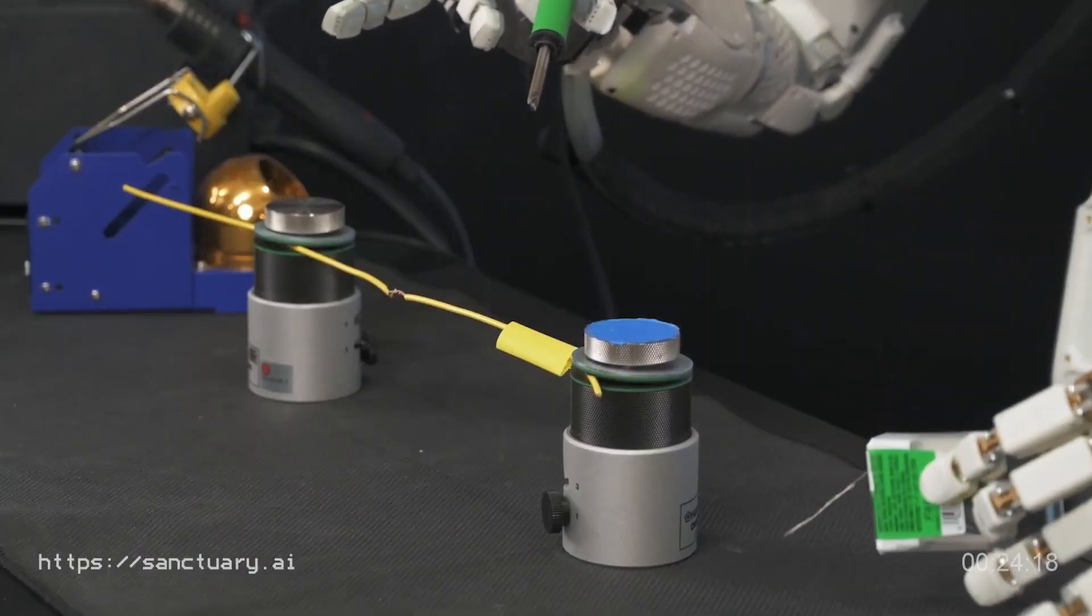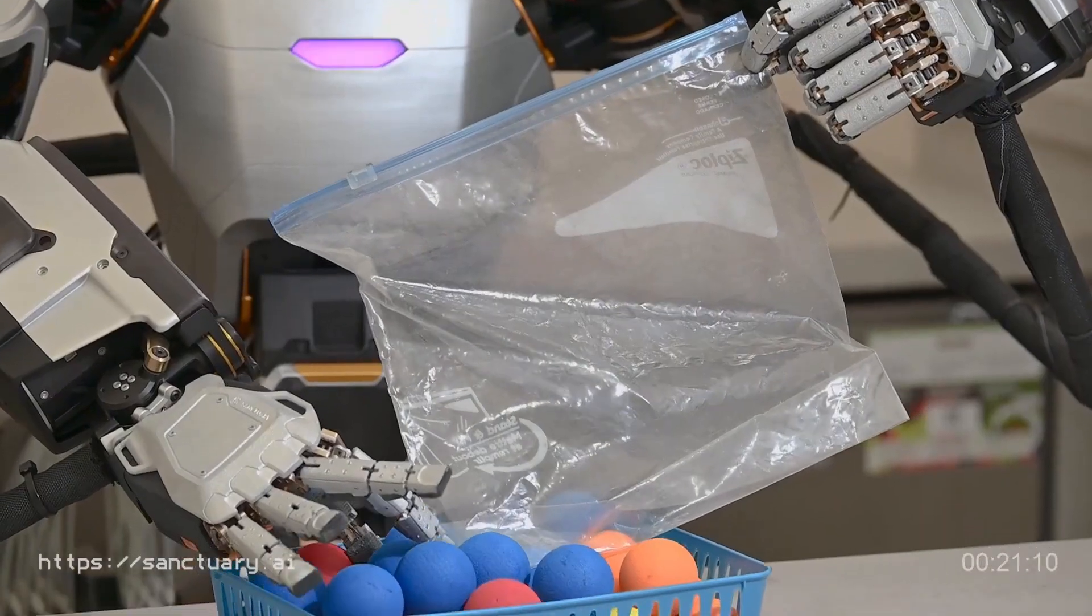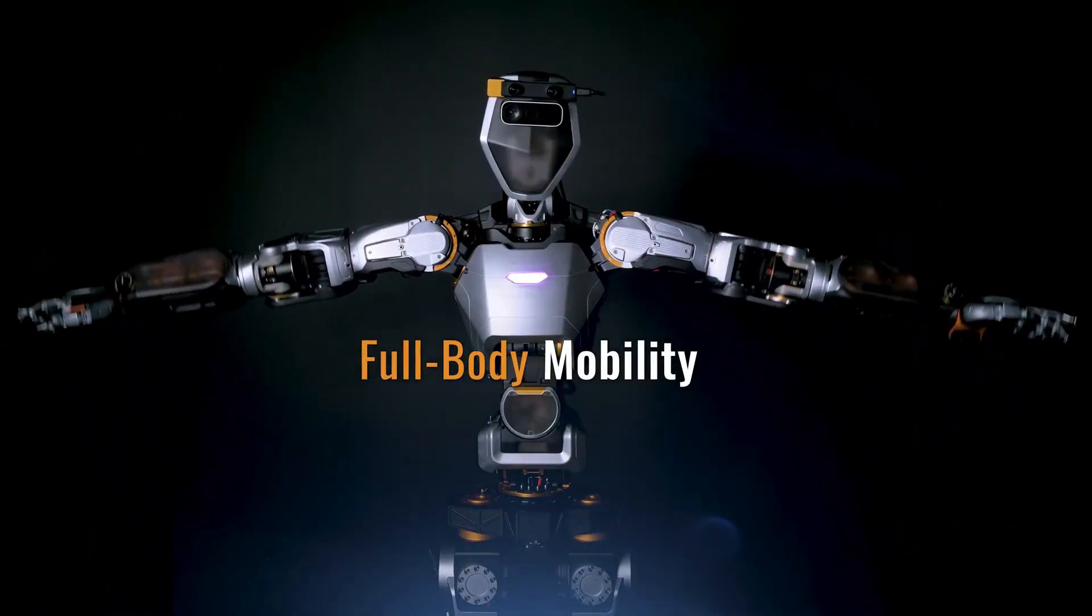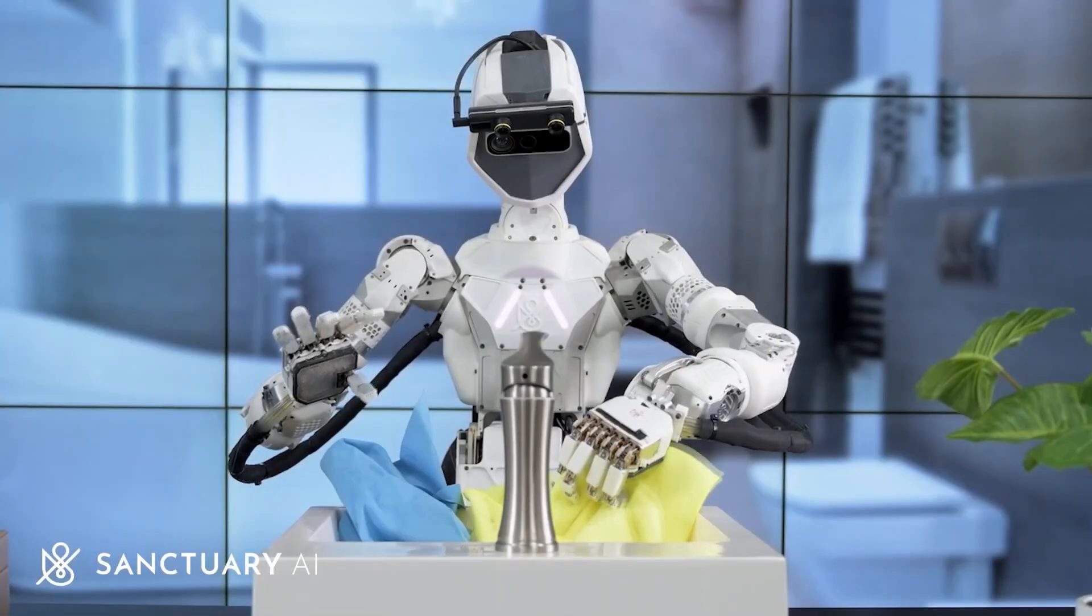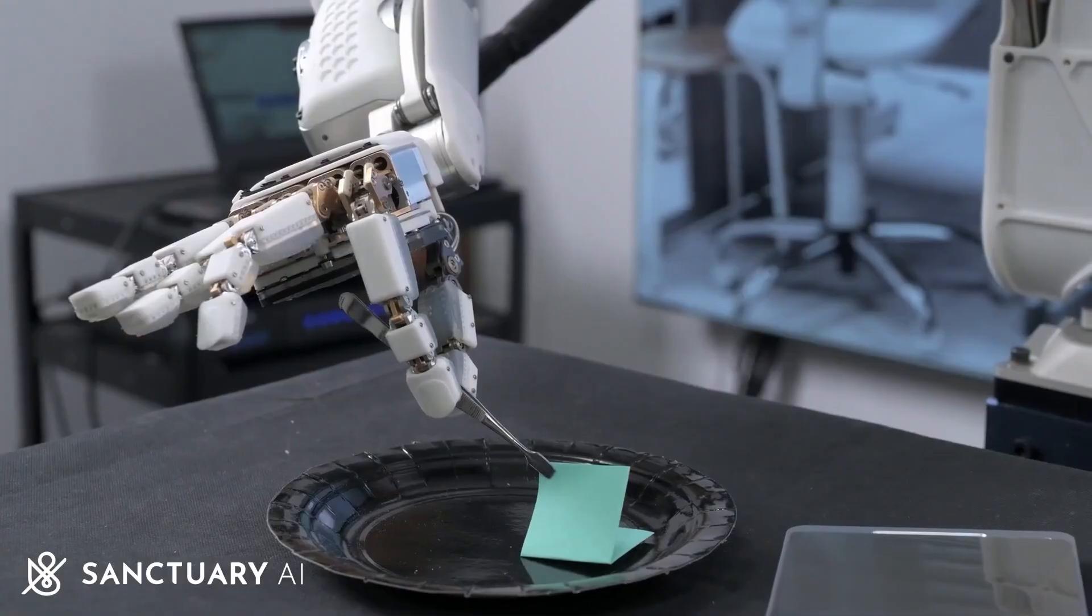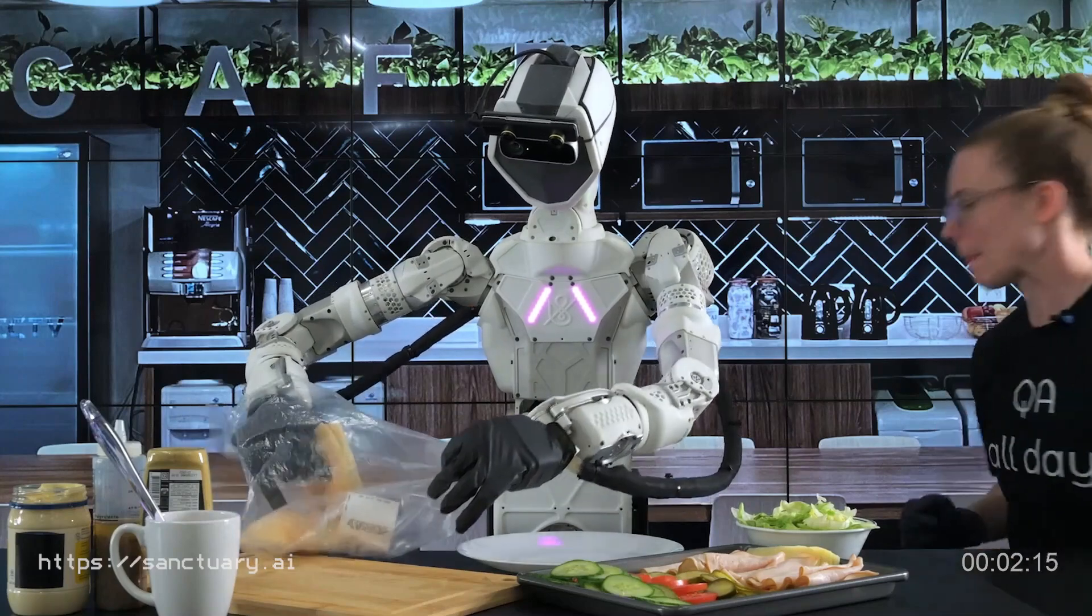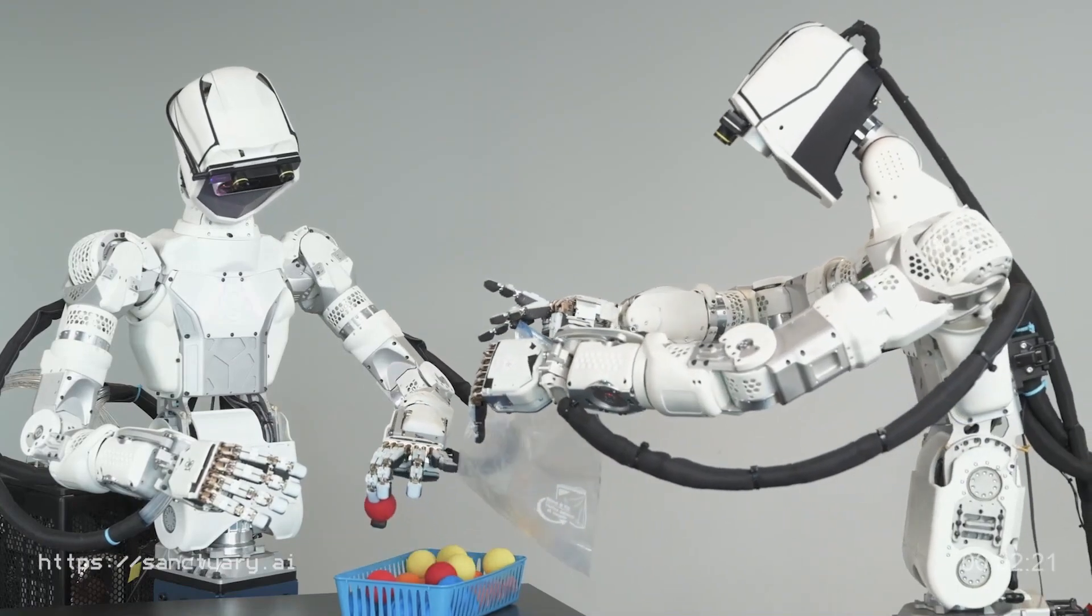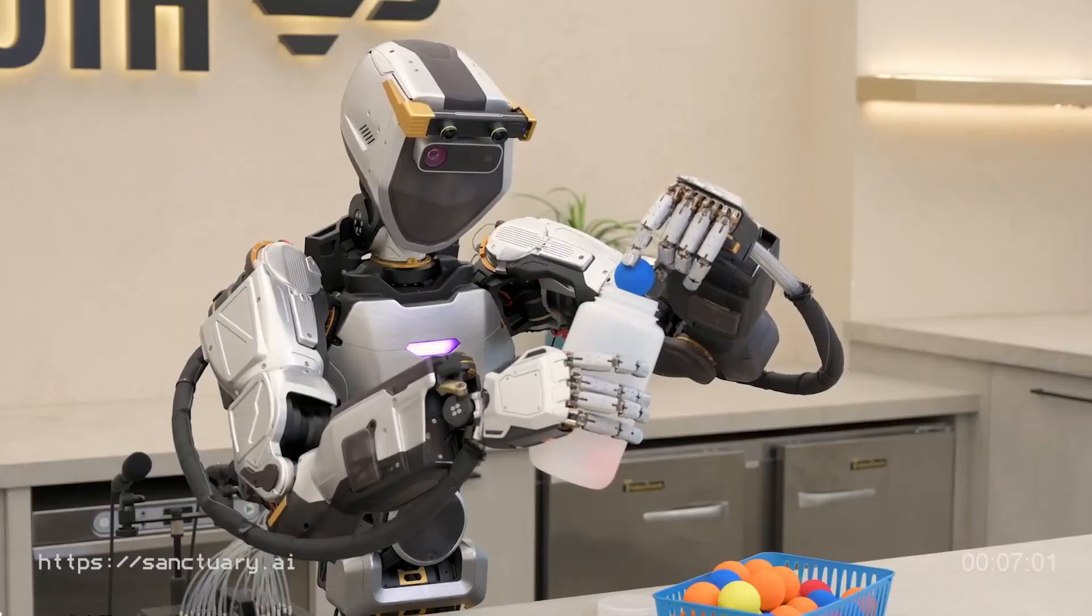One reason why the Phoenix robot is so intelligent is because of its carbon system, a pioneering and unique AI control system designed to give Phoenix human-like intelligence and enable it to do a wide range of work tasks. This was a major step forward in Sanctuary AI's mission to create the world's first human-like intelligence in general-purpose robots. It is like having a robot that embodies thinking and acting human-like intelligence and is ready to offer this service at any time it is needed.